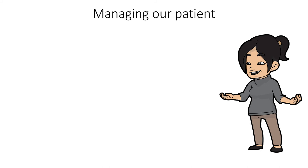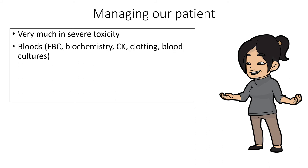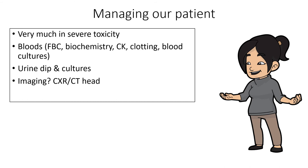Let's talk about managing our patient. She's quite toxic — symptoms from all three criteria. Investigations: full blood count, renal and liver function, creatine kinase to rule out rhabdomyolysis, clotting screen, and blood cultures. Do a urine dip and cultures, check for myoglobin in the urine. Consider imaging: chest X-ray if concerned about infection, CT head if the picture is unclear, and CSF analysis if meningitis or encephalitis is being considered.